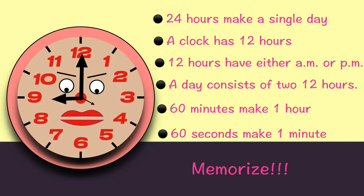It is necessary to memorize: 60 seconds make one minute, 60 minutes make one hour, 12 hours make one round of the clock, two rounds make a single day — 24 hours make a single day. We always say a clock on the hour.